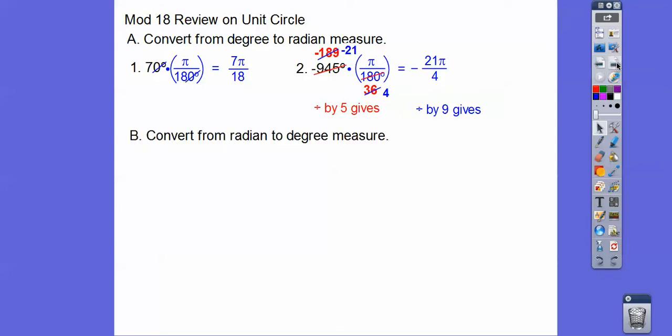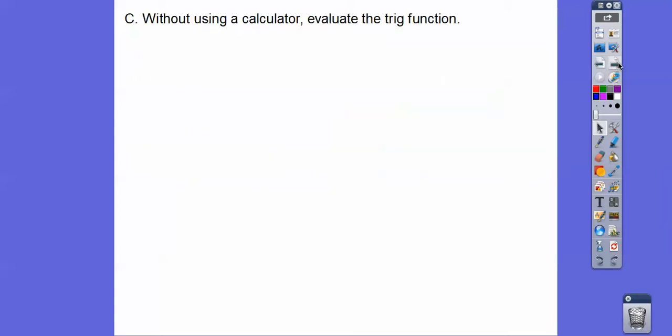Let's do the other way, convert from radian to degrees. Here it is in radian, so I'm going to multiply by the reciprocal, 180 over π. The π's cancel, and 18 goes into 180 ten times, so 330 degrees. Same thing, multiply by 180 over π. The π's cancel, 9 goes into 18 twenty times, so negative 460 degrees.